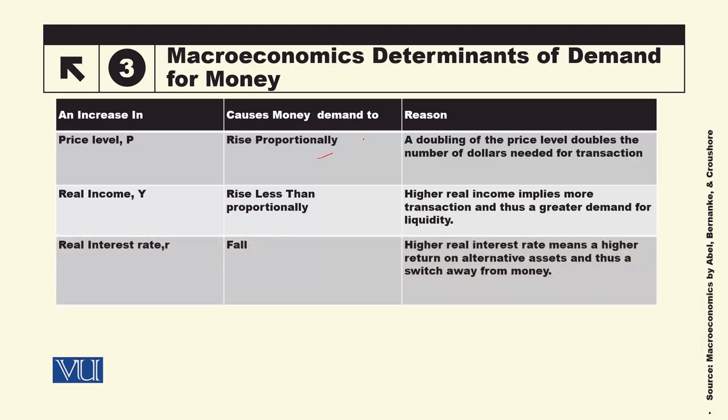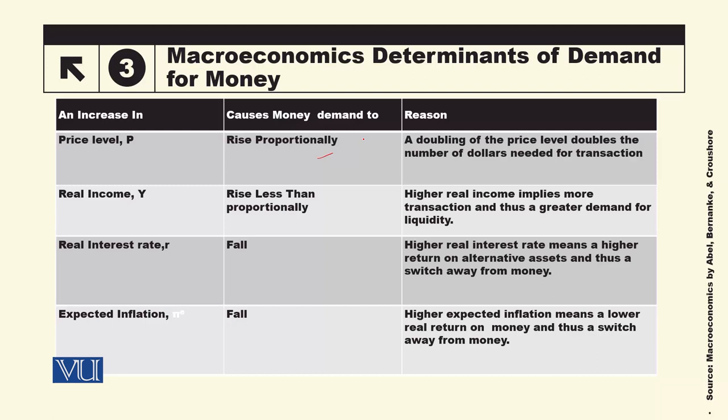Real interest rate जب بڑھے گا — यह वो interest rate है जो non-monetary assets पर मिलता है — तो money hold करने की opportunity cost बढ़ जाएगी, लोग money कम hold करेंगे और wealth को दूसरे assets पर shift कर देंगे, money demand कम हो जाएगी। इसी तरह अगर लोग expect करें कि future में inflation होगा, कीमतें बढ़ेंगी, तो money की purchasing power कम हो जाएगी — लोग gold, real estate, या दूसरी चीज़ों पर shift हो जाते हैं। Higher expected inflation means a lower real return on money, and thus switch away from money।